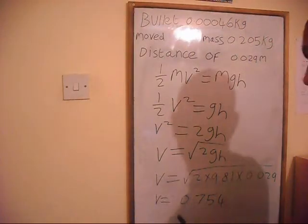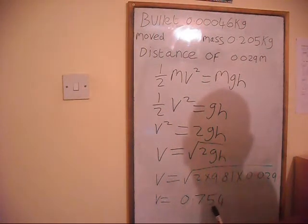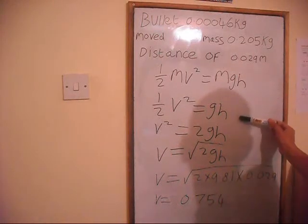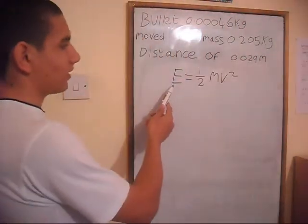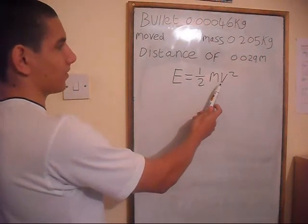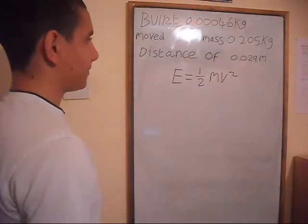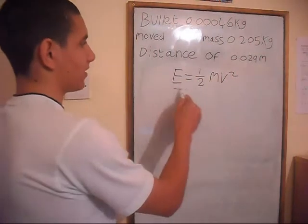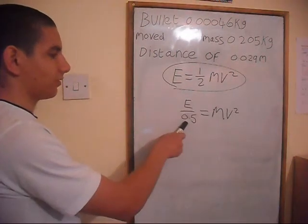A different way of calculating the velocity of the block moved by the bullet — which we found to be 0.754 m/s — is as follows. We know the kinetic energy of the block is ½ times M (block mass plus bullet mass) times v squared. We can rearrange this: energy over 0.5 equals Mv squared.